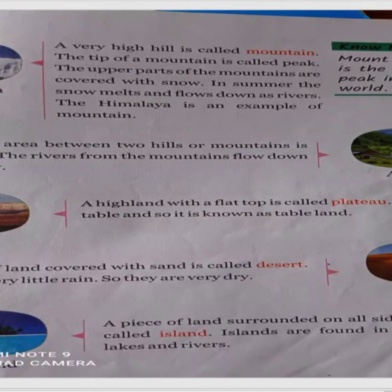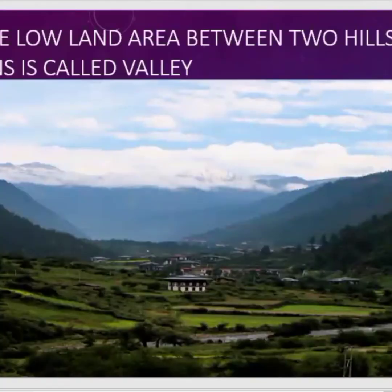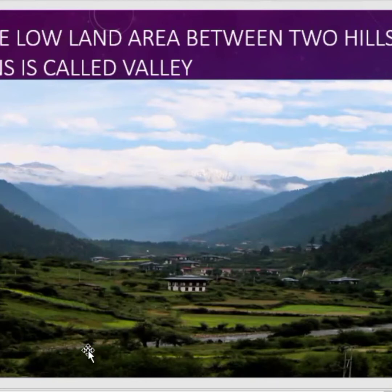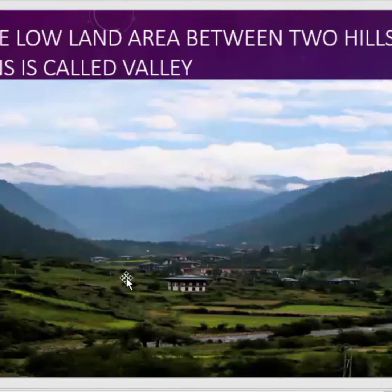And next is a valley. What is a valley? A lowland area between two hills or mountains is called valley. The rivers from the mountains flow down into the valley.